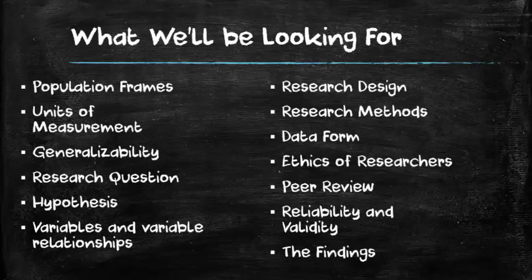We're going to learn about variables and variable relationships, research designs, and types of methods in the field of sociology specifically. We're going to learn about the different forms that data can take, research ethics, and the peer review process for researchers. We just learned about reliability and validity, so we've got those under control. Then we're going to learn about how to interpret and understand research findings. When you find these particular concepts, you should be writing down those definitions or making note of them. Let's get a start with our first article.